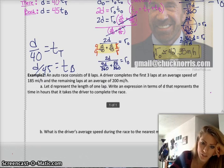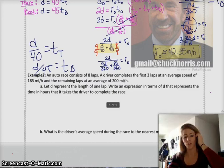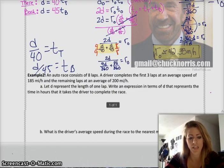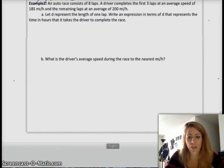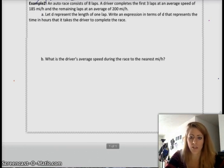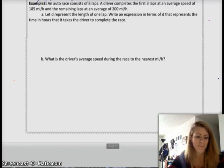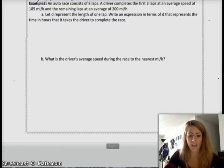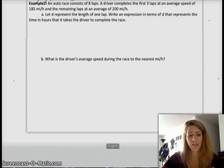I'm going to do one more example, just so you see the process on a different problem. But they're pretty much all very similar to that. Okay. You've got an auto race, has 8 laps. The driver completes the first 3 laps at an average speed of 185 miles an hour. And the remaining laps at an average of 200 miles an hour. Let D represent the length of one lap. Write an expression in terms of D that represents the time in hours that it takes the driver to complete the race. So, this is still similar to the first question.